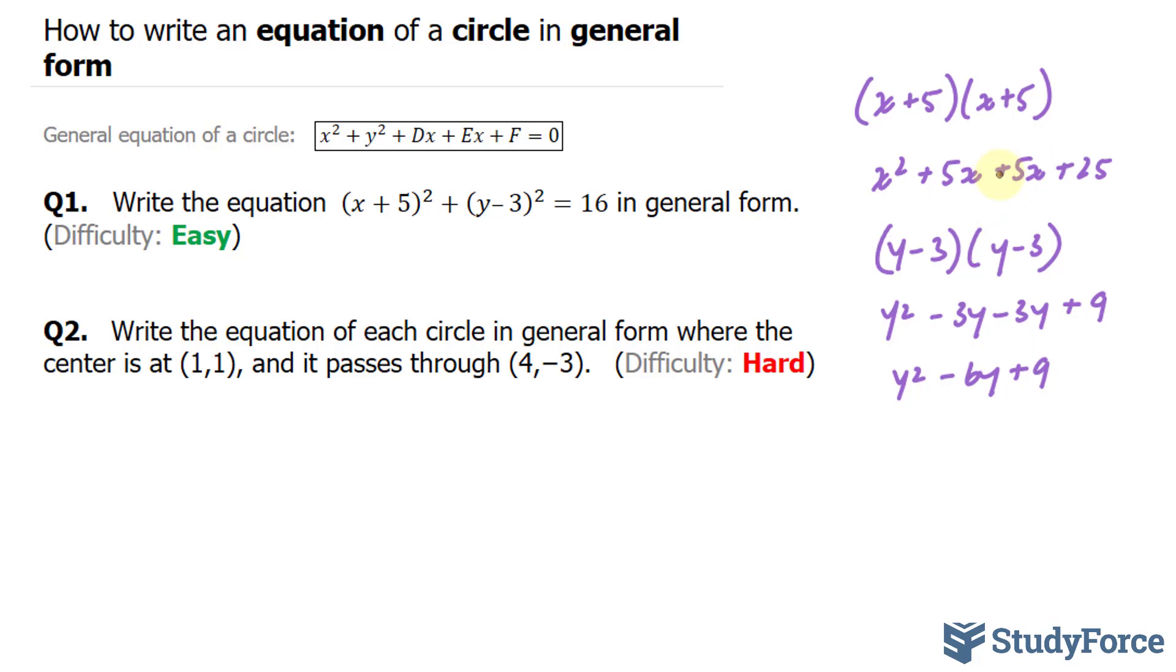I'm going to highlight these two main parts and apply them into my equation, where I end up with x² + 10x + 25 + y² - 6y + 9. And I'm also going to bring this 16 over to the left side, because notice that in the general form equation, all of the terms are to one side. So negative 16.